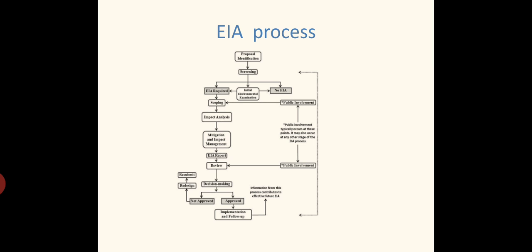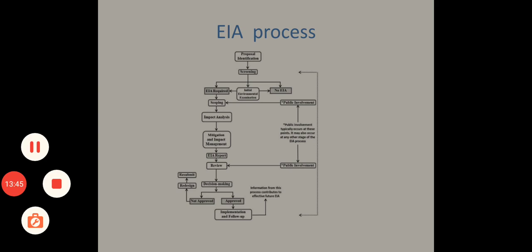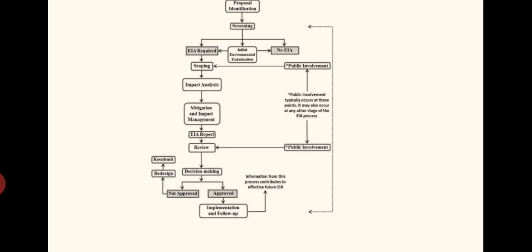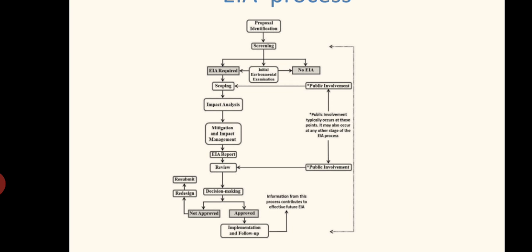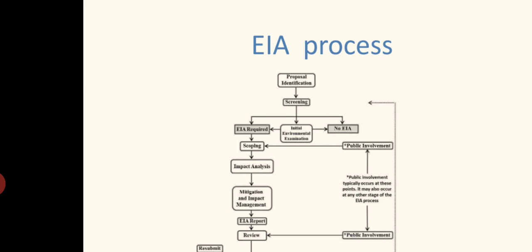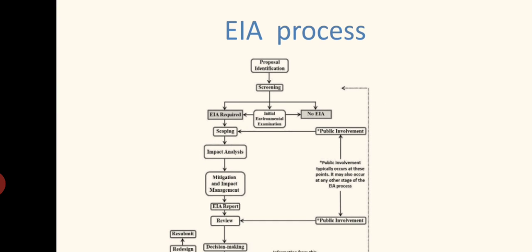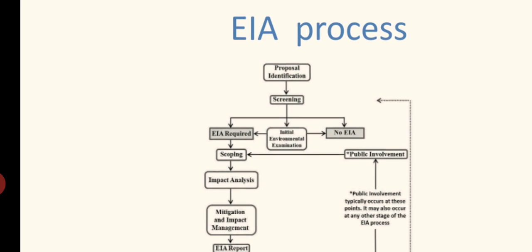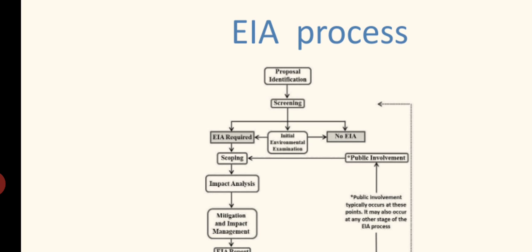Now, coming to the various processes happening in Environmental Impact Assessment. The processes we will discuss here, and what happens in between stages will be discussed in the next presentation. The first step in the EIA process is proposal identification, where the project proposal is prepared and submitted by the company or whoever is implementing the project.